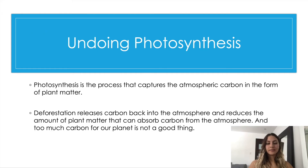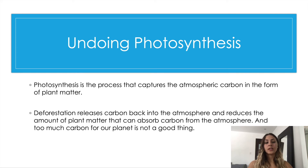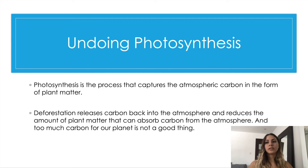Undoing photosynthesis. Photosynthesis is the process that captures the atmospheric carbon in the form of plant material. Deforestation releases carbon back into the atmosphere and reduces the amount of plant matter that can absorb carbon from the atmosphere, and too much carbon for our planet is not a good thing. Forests are known as carbon sinks because trees absorb carbon dioxide and exhale oxygen, which we need to survive. Humans rely on a healthy forest ecosystem to be able to inhale clean oxygen, and trees rely on a healthy forest ecosystem to thrive and protect themselves from danger.